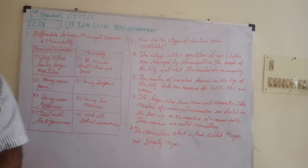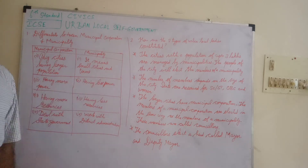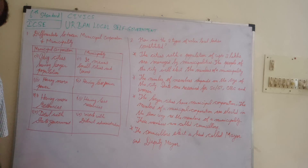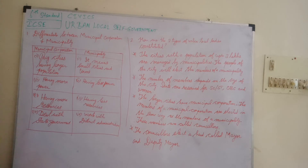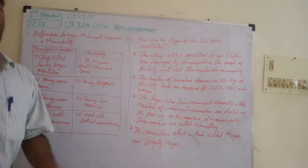Municipality consists of small cities and towns, not villages. For example, municipal corporations in Tamil Nadu: Chennai, Salem, Erode, Madurai, Nellai, Thanjavur — these cities are said to be municipal corporations.